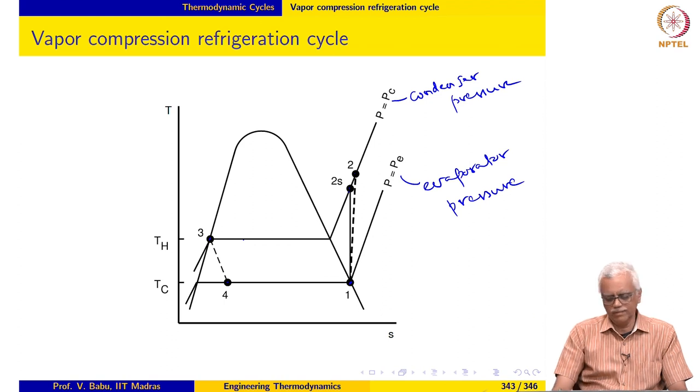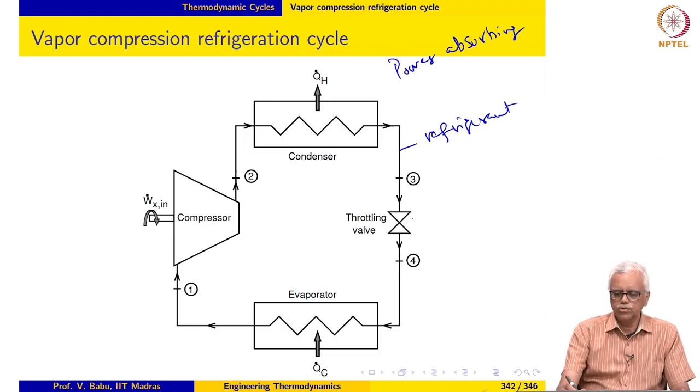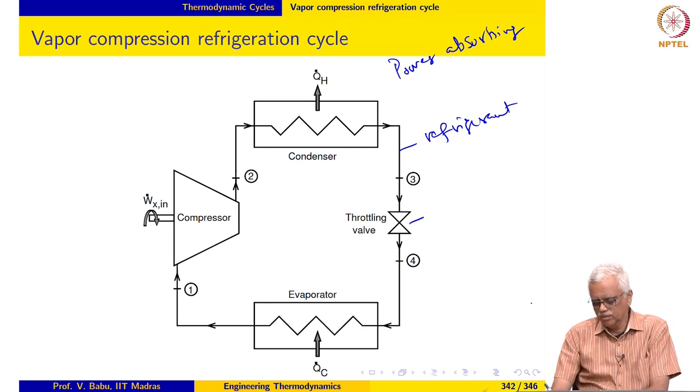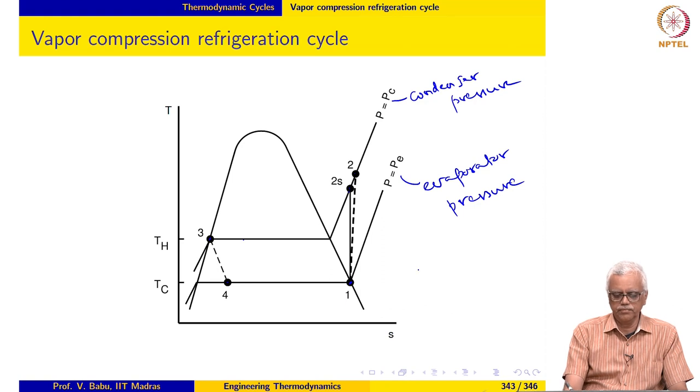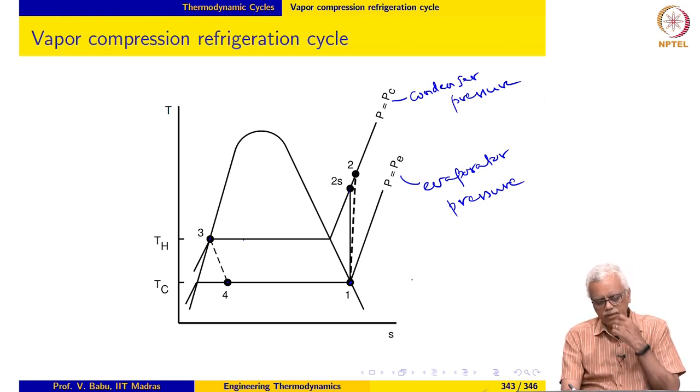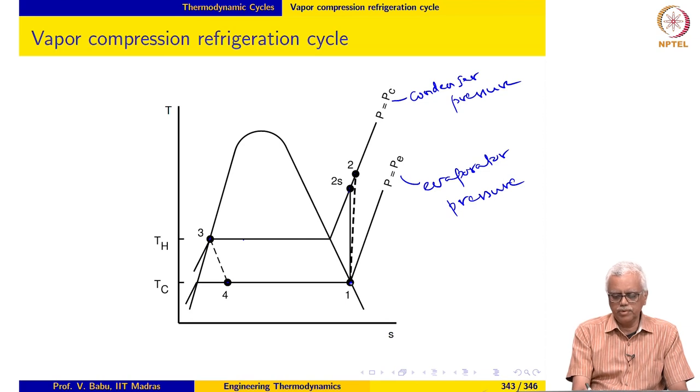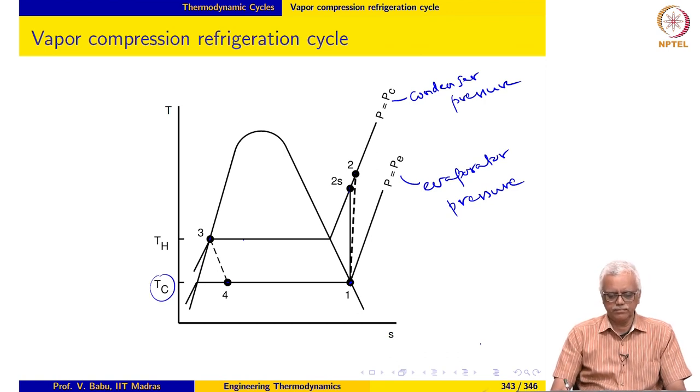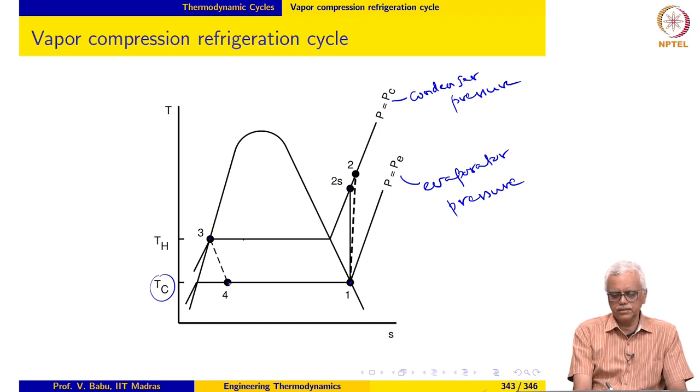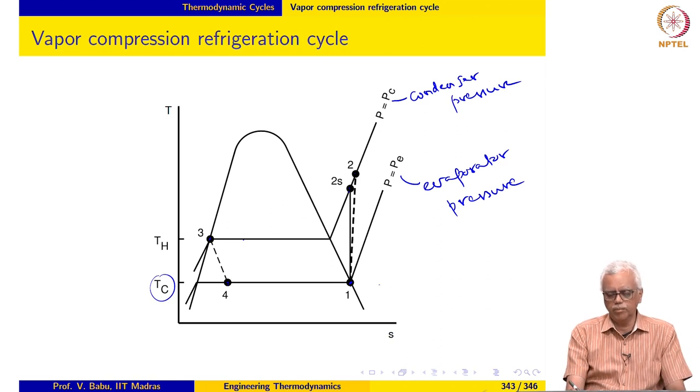It is then throttled in a throttling valve to low pressure and low temperature. The low pressure being the evaporator pressure and it becomes a saturated mixture at the end of the throttling process. The evaporator temperature or the saturation temperature corresponding to the evaporator pressure is taken as TC.